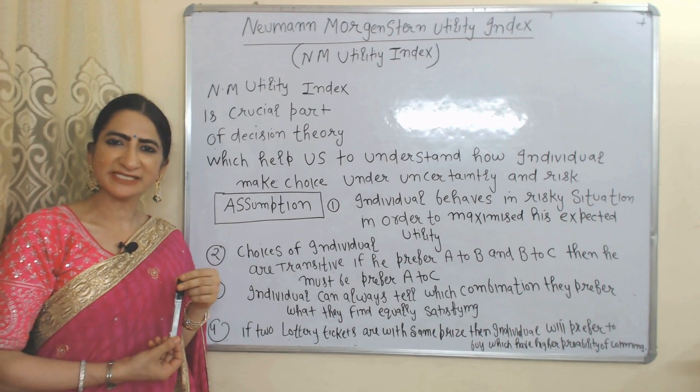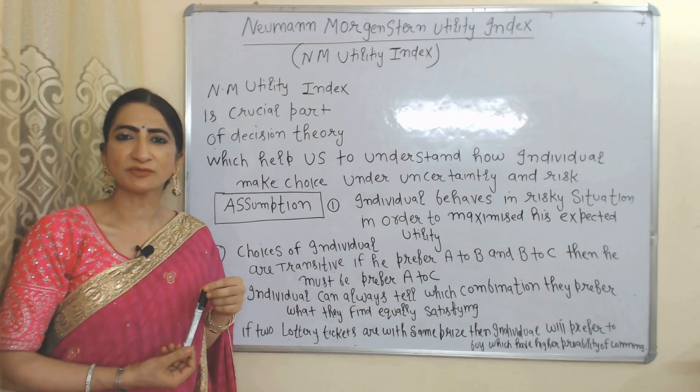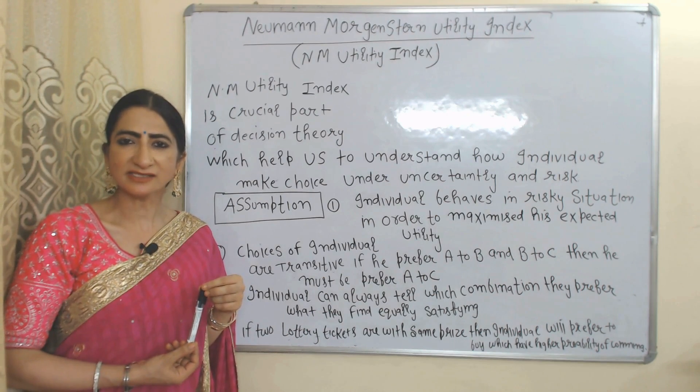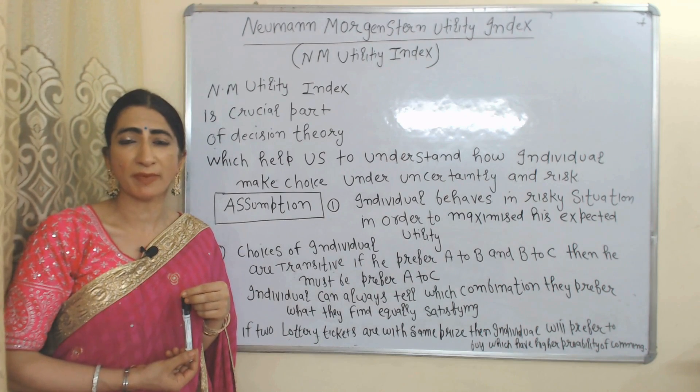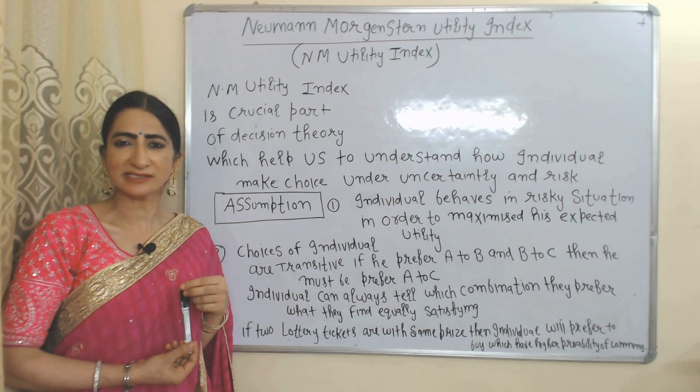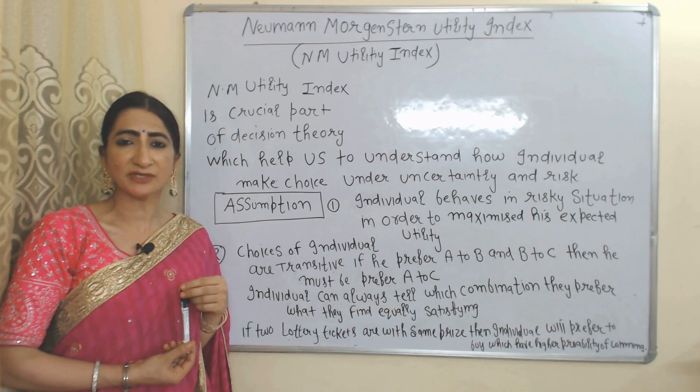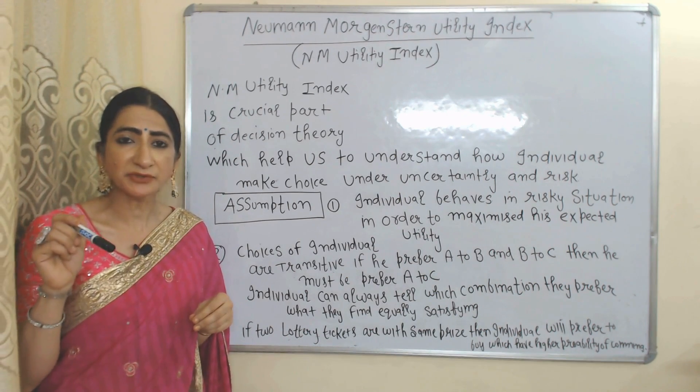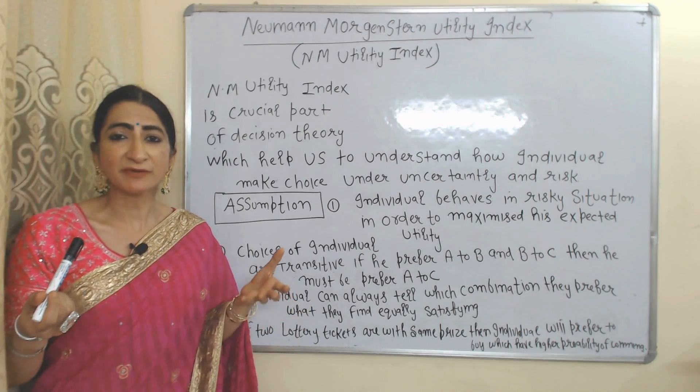Hello everyone, my name is Mini Seti. I hope you all are staying healthy. If you're scared of how to make decisions under uncertainty and risk, then don't worry. Today we are going to talk about Neumann-Morgenstern utility index. In short, you can call it NM utility index.